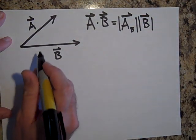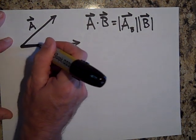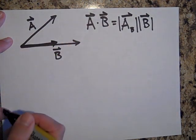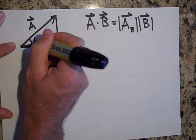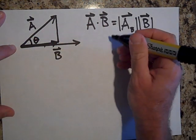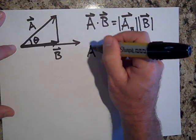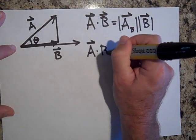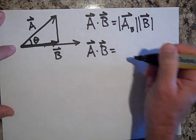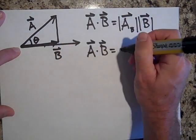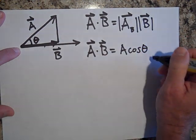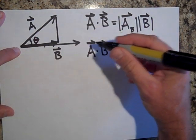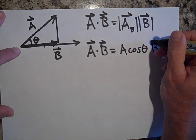So the part of A that's in the direction of B is this part. That's the part that you want to take. That part, if that's theta, then A dot B is equal to A cosine of theta times the whole length of B. Notice I don't put vectors there because these are scalar quantities at this point.